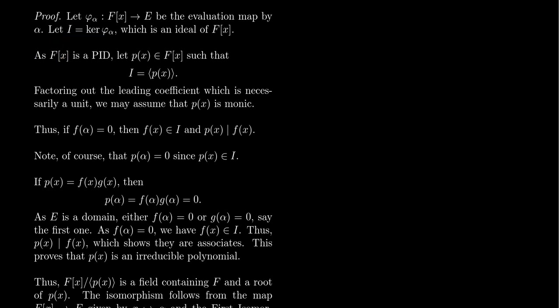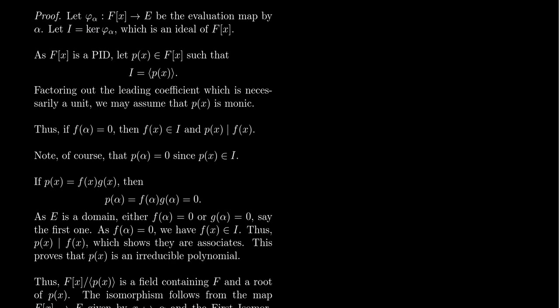Since F is a field, F[x] is a Euclidean domain, and every Euclidean domain is a principal ideal domain. Therefore there exists some polynomial p(x) in F[x] such that I equals the principal ideal generated by p(x). This p(x) is our candidate for the minimum polynomial — it generates the kernel of the evaluation map associated to alpha. We can assume this polynomial is monic: divide by its leading coefficient, which is a unit in F, and you get an associate that generates the same ideal.